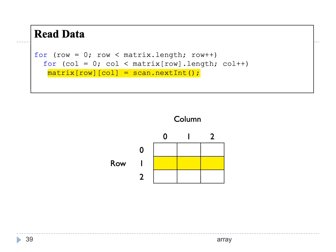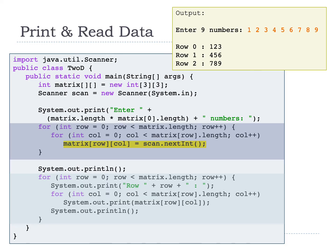Instead of fixing the values for the array, we can also ask the user to enter their values. We ask for each column within each row. For example, if the array has 3 rows and 3 columns, we ask the user for row 0 column 0, row 0 column 1, row 0 column 2, then the same for row 1 and row 2. At matrix[row][column] = scan.nextInt(), it will repeat until all values for each row and column are entered. So if the user enters 1 through 9, those numbers are stored accordingly into the 3-by-3 array.